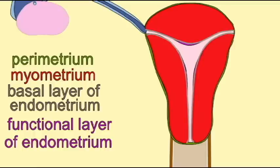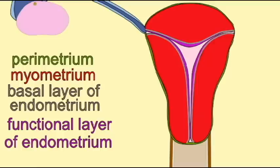And then finally, two layers of the innermost lining, the endometrium. The basal layer of the endometrium is always present during all phases of the menstrual cycle. The functional layer of the endometrium develops over the course of the menstrual cycle and is shed at the beginning of the next menstrual cycle.